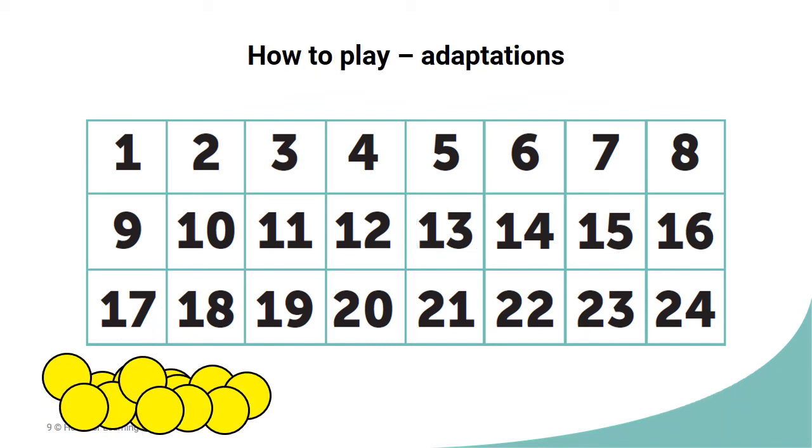To support children, multiplication grids or prompts to remind them of the difference between factors and multiples could be provided. A prompt card reading a definition of a factor with some examples could be a really useful aid. Bead strings could be used alongside the game for children to test or prove both factors and multiples.